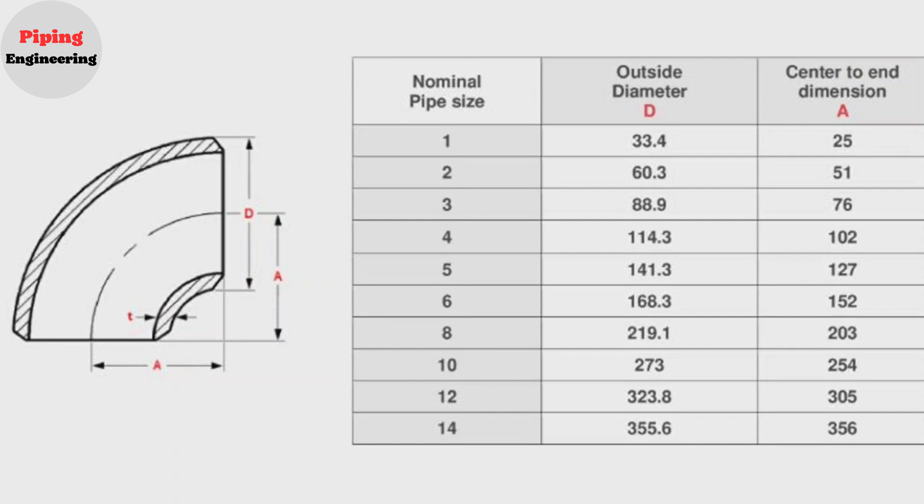For example, 1 inch elbow size is 25 mm. 2 inch elbow size is 51 mm.